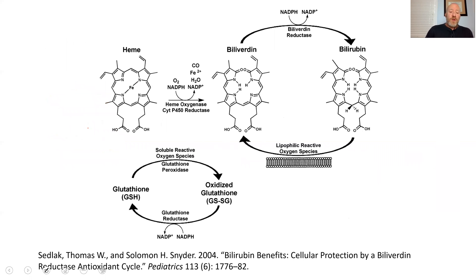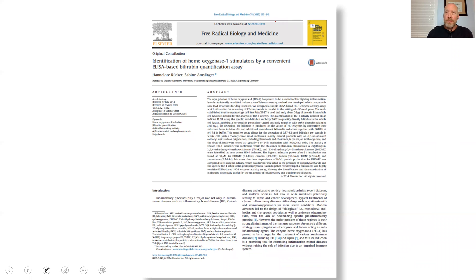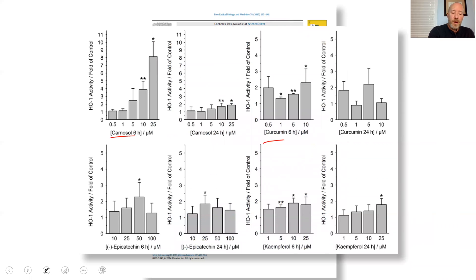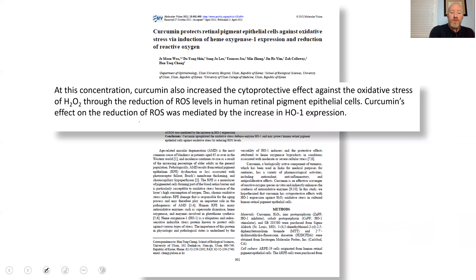Looking at this again, there are ways to potentially increase bilirubin. If we can increase heme oxygenase, then maybe we can increase biliverdin and therefore bilirubin. We could also seek ways of increasing biliverdin reductase or supplying more reducing agents of NADPH. Here are a couple of quick papers looking at botanical extracts that increased heme oxygenase: carnosol from rosemary, curcumin, and green tea extract have all been shown to somewhat increase heme oxygenase.